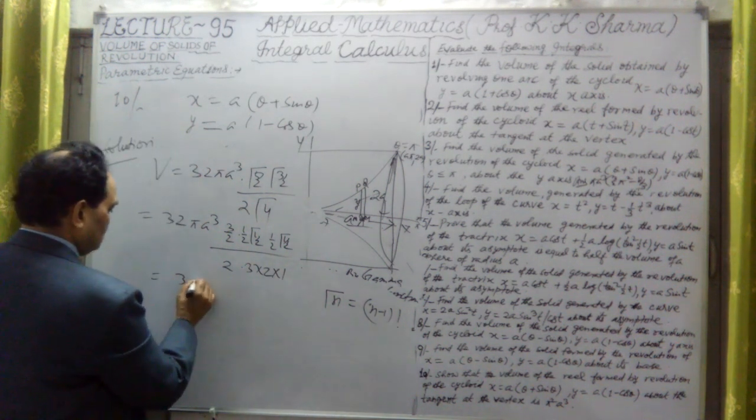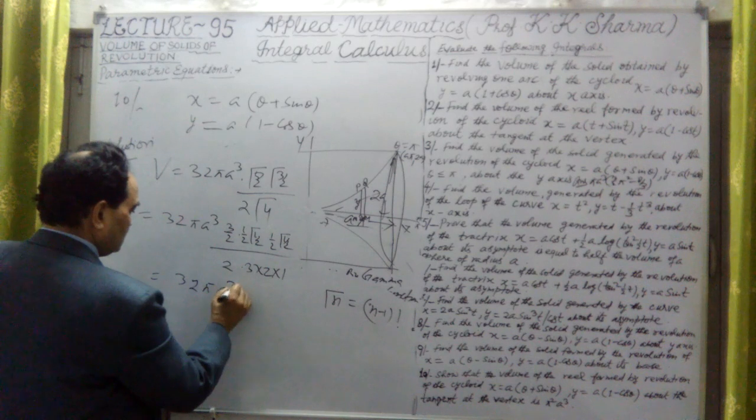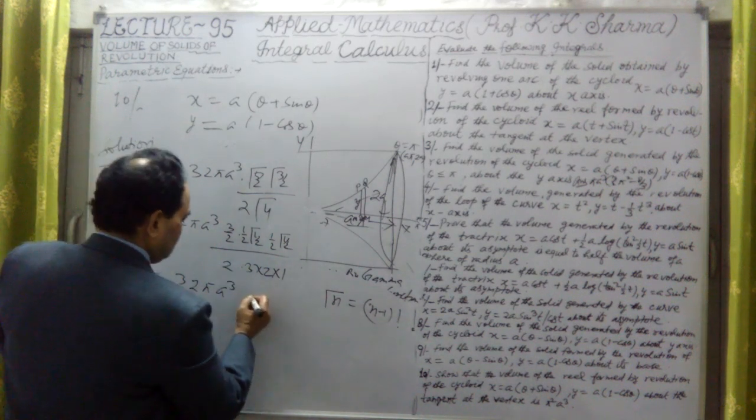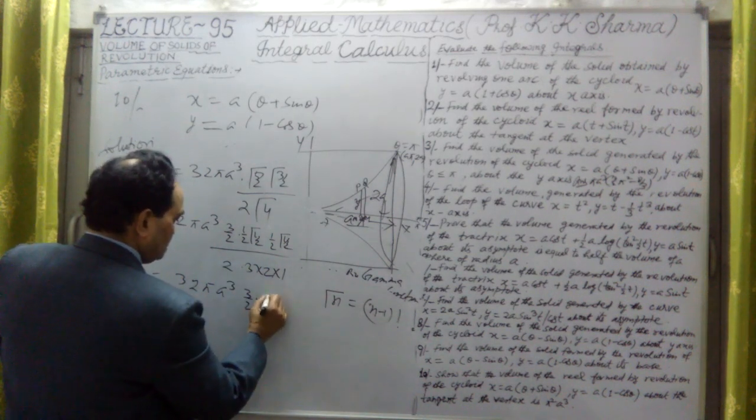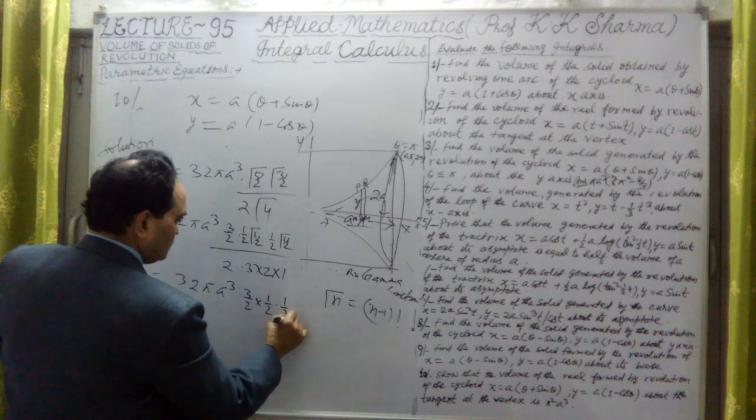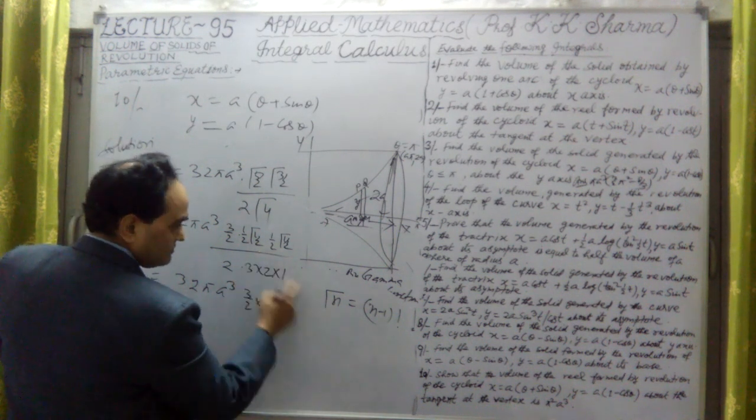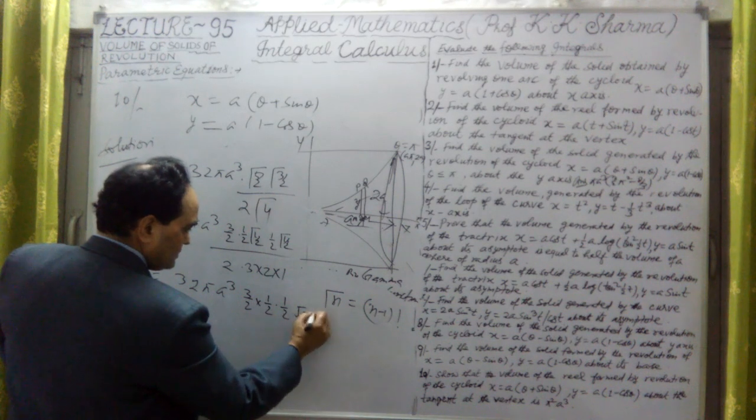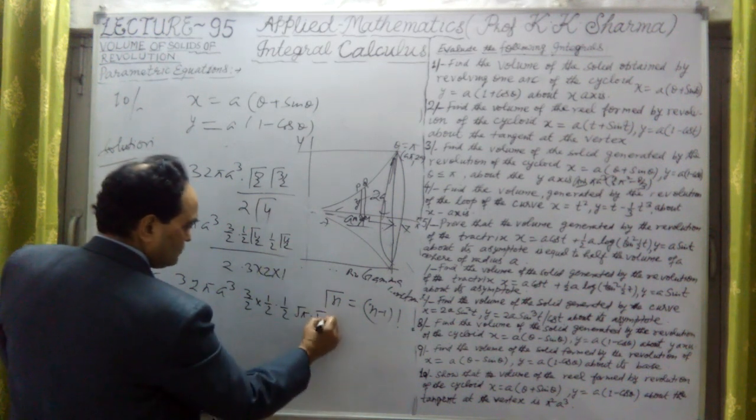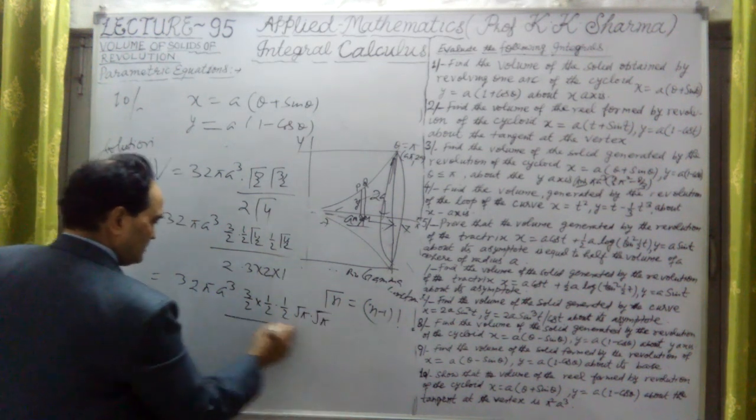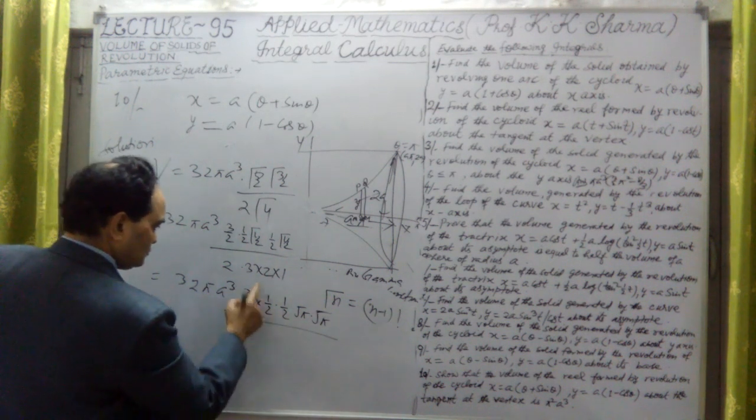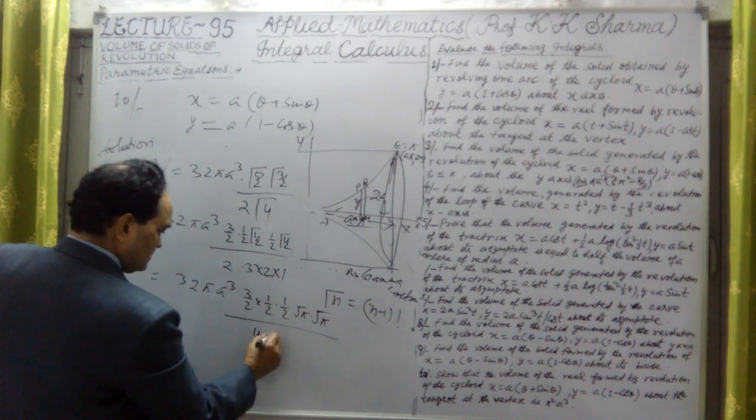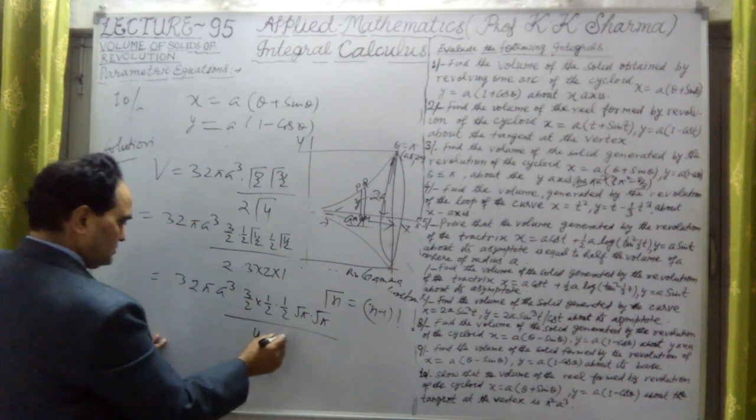It is 32 pi a cubed into now, this is 3/2 into 1/2 into 1/2 into, this gamma 1/2 is square root pi, and gamma 1/2 is also square root pi, divided by 3, 4 into 3, this is 4 into 3. The 3 cancel out.